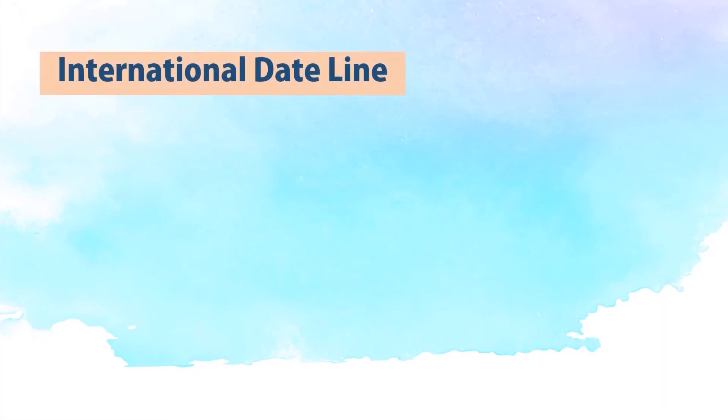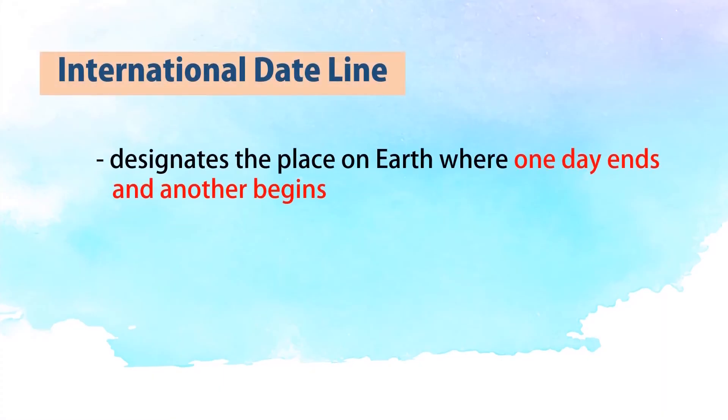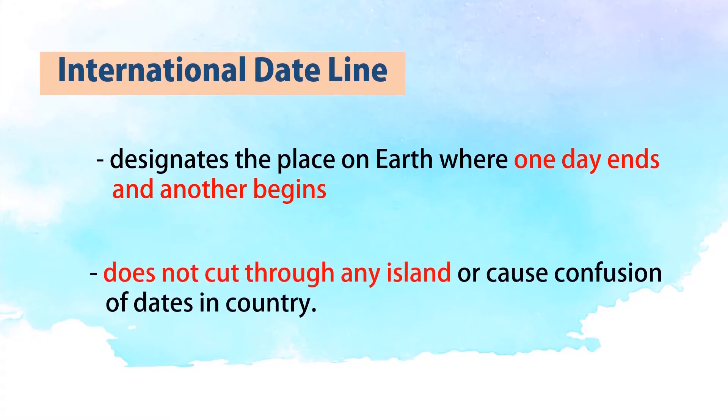The international dateline designates the place on earth where one day ends and another begins. It does not cut through any island or cause confusion of dates in a country.